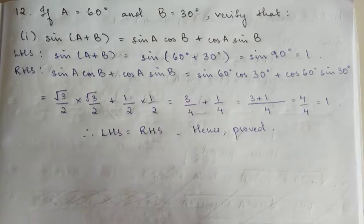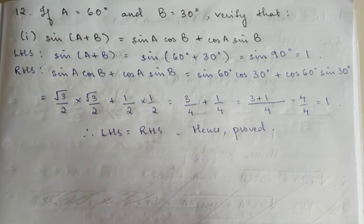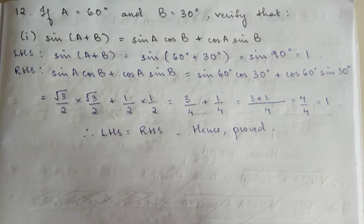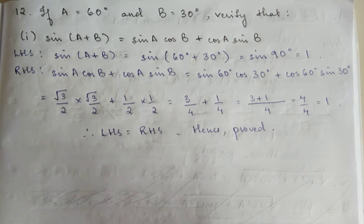Similar to that, question number 12 has sub-numbers 1, 2, 3, 4. I will do number 1: verify that sin(A+B) equals sinA cosB plus cosA sinB. A equals 60, B equals 30. LHS equals sin(A+B) = sin(60+30) = sin90. Using the formula sin90 equals 1.